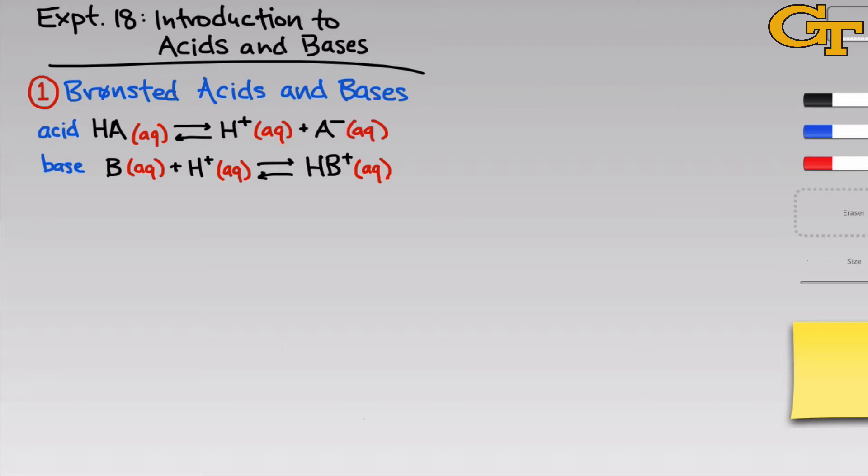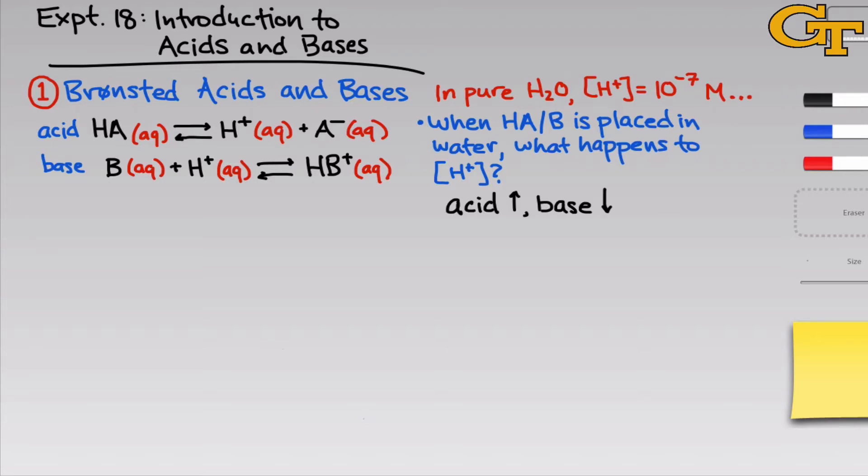In pure water, the concentration of H+ is 10 to the negative 7 moles per liter. So what happens when we add an acid or a base to water? We can see from the chemical equations that the acid generates H+. So when an acid is placed in water, the concentration of H+ should increase, and that's what we observe.